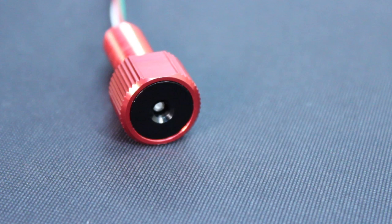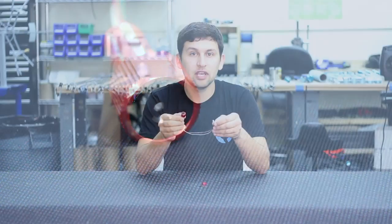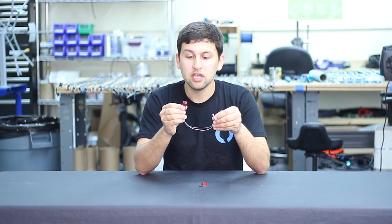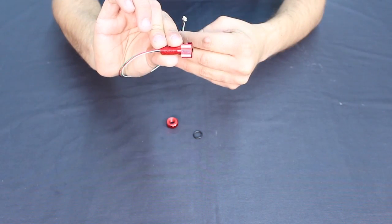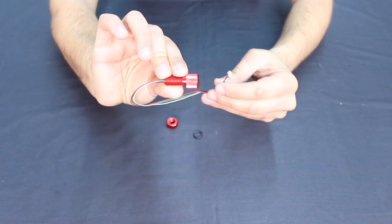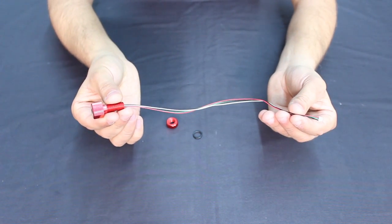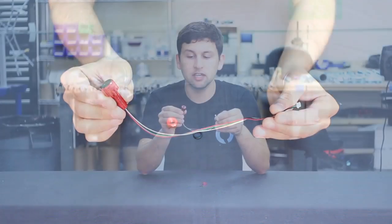Inside the sensor is the new Measurement Specialties MS5837 Waterproof Pressure Sensor, and we've enclosed it into one of our cable penetrators with an O-ring and bulkhead design, so that you can put it onto a watertight enclosure very easily.